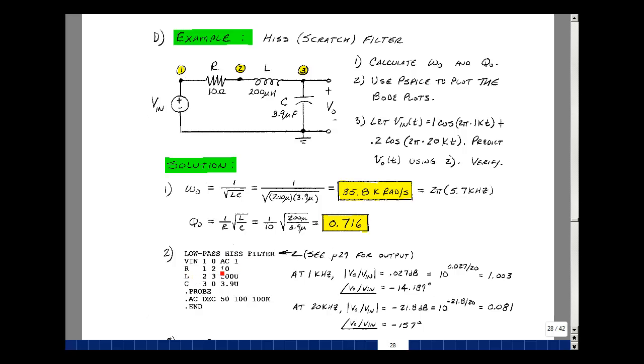R is between 1 and 2 with a value of 10. L is between 2 and 3 with a value of 200 microhenries. C is between 3 and 0 with a value of 3.9 microfarads.